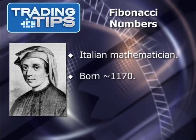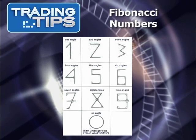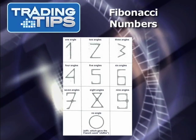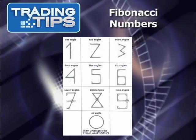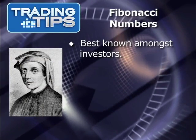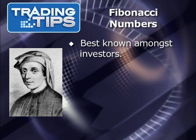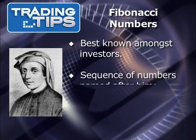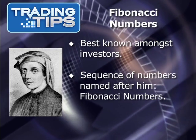Leonardo Fibonacci was an Italian mathematician born around 1170. He was the son of a wealthy merchant. Fibonacci's greatest accomplishment was the spread of the Hindu-Arabic numeral system — the system of numbers we use today — which he spread throughout Europe. Although this was a huge accomplishment, Fibonacci isn't really remembered for this today. Instead, he's best known among investors for the sequence of numbers named after him: Fibonacci numbers.